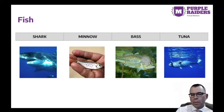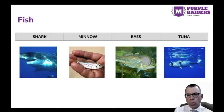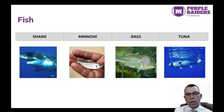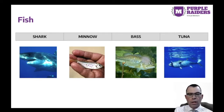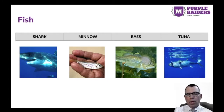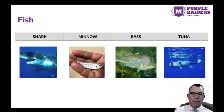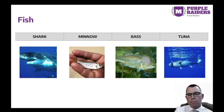Another group of animals with backbones are called fish. Fish live in water. Some fish live in fresh water, like creeks, ponds, and lakes. Other fish live in bodies of salt water, like the ocean. They breathe with body parts called gills. Fish have fins that help them swim. Examples of fish include sharks, minnows, bass, and tuna.